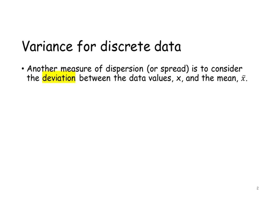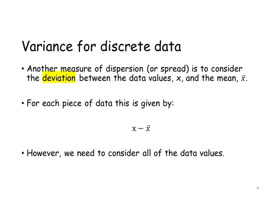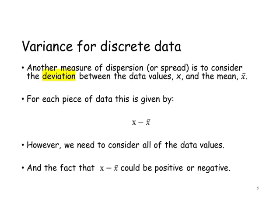Another measure of dispersion, also known as a measure of spread, is to consider the deviation between the data values x and the mean x-bar. For each piece of data, this is given by x minus x-bar. However, we need to consider all of the data values and the fact that x minus x-bar could be positive or it could be negative.